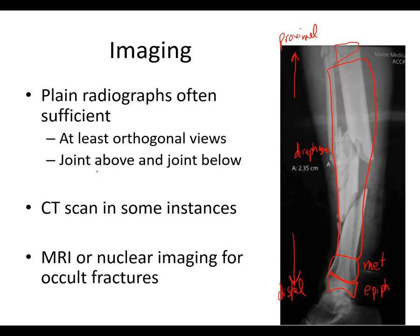The reason for getting a joint above and below is that a diaphyseal fracture can frequently present with a dislocation at the joint. In the lower leg we don't see it as much, but in the upper extremity we see it a lot. For a forearm fracture, you check an elbow and a wrist — joint above, joint below — especially for diaphyseal fractures in the upper extremities. CT scans are sometimes needed for preoperative planning and articular injuries. MRI and nuclear imaging can be done for occult fractures — maybe a stress fracture or a femoral neck fracture where you suspect it but can't see it on x-ray.